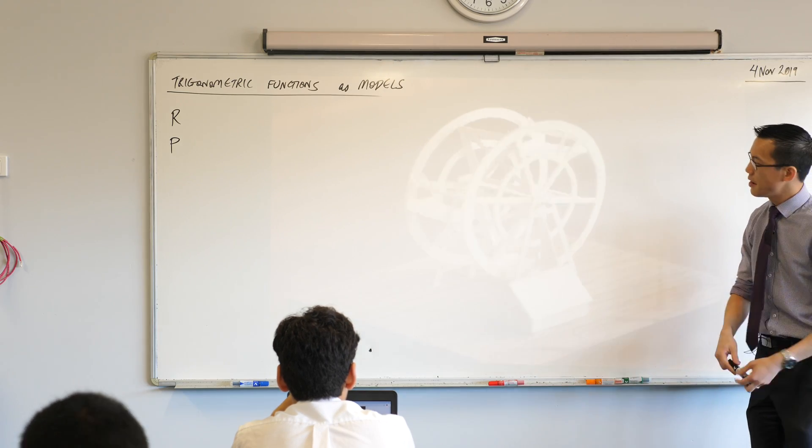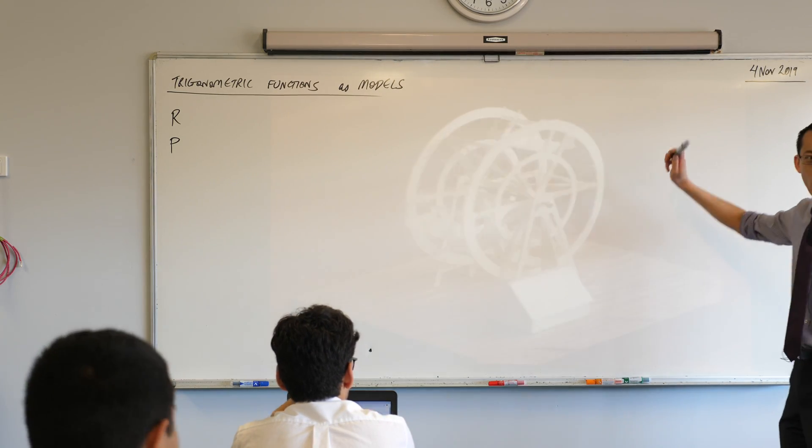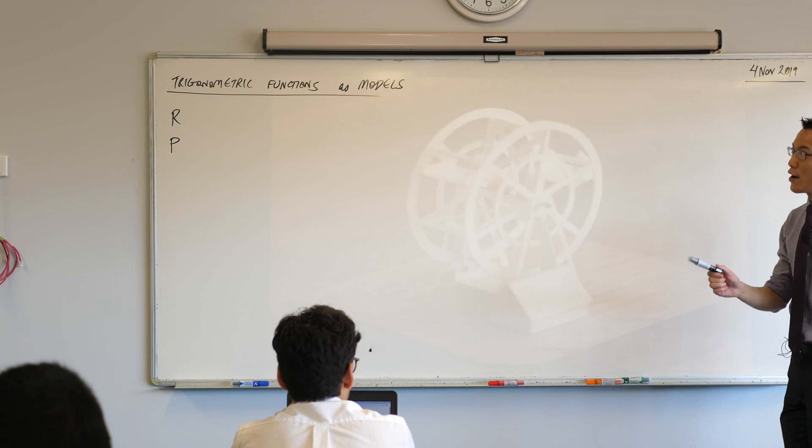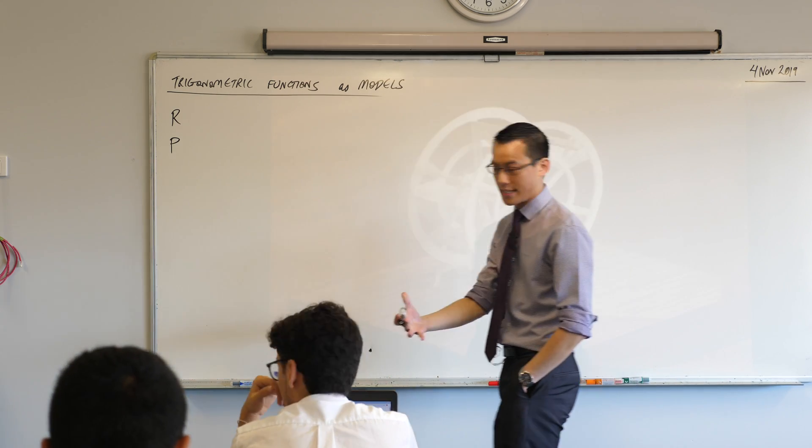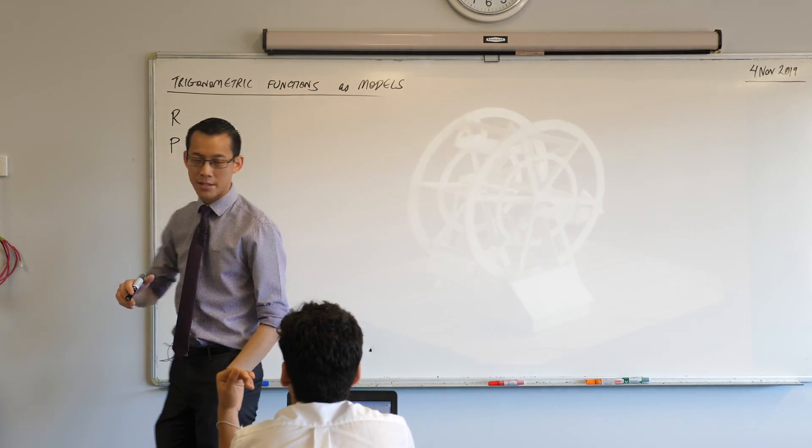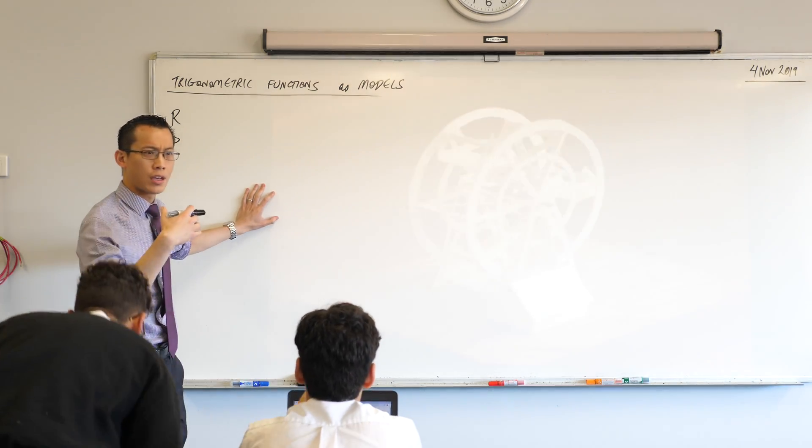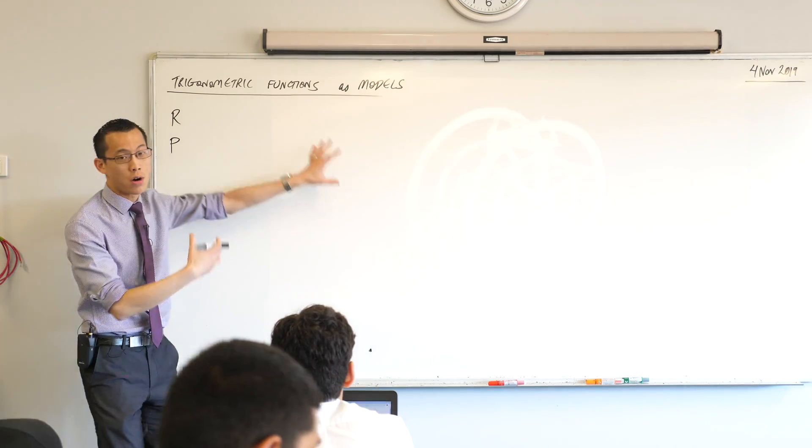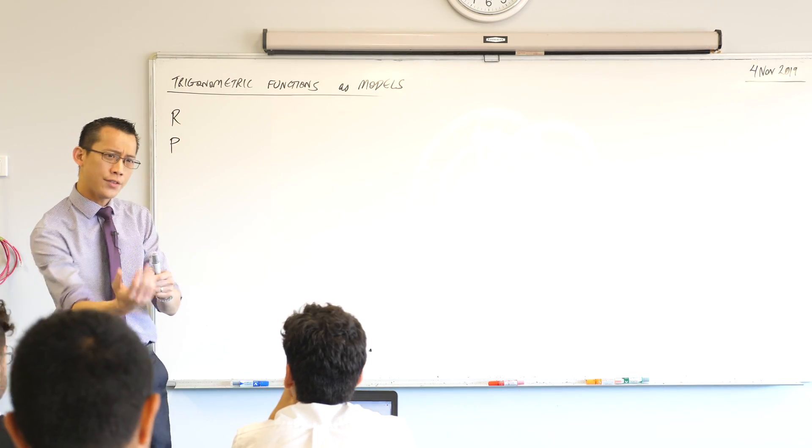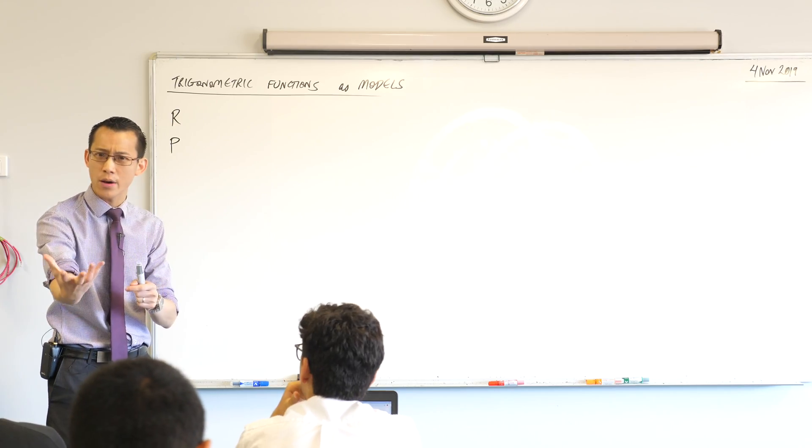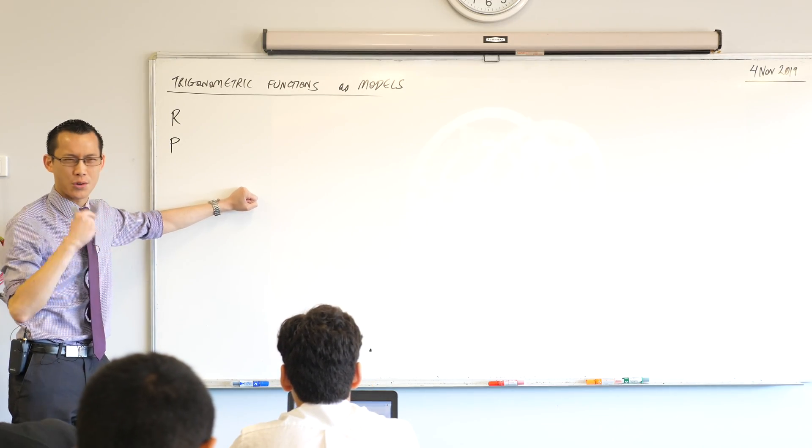It's a Ferris wheel. And it spins and spins and spins. And what we can do is we can model the motion of this Ferris wheel using a trigonometric function. Now what I'm going to do is provide some details to you, which I'm starting off here. And we're going to construct an equation that will model this.